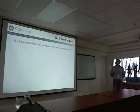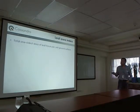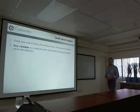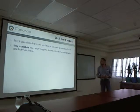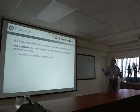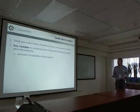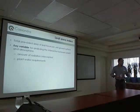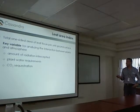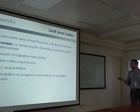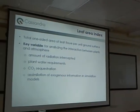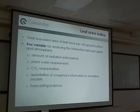Leaf area index is defined as the total one-sided area of leaf tissue per unit ground surface. It's a key variable for environmental studies because it's involved in estimating the amount of radiation intercepted by the canopy — so we need it to estimate photosynthesis. It's also important for plant water requirements and evapotranspiration, and for the estimation of state information in simulation models, as Andy was talking about, and for forecasting purposes.